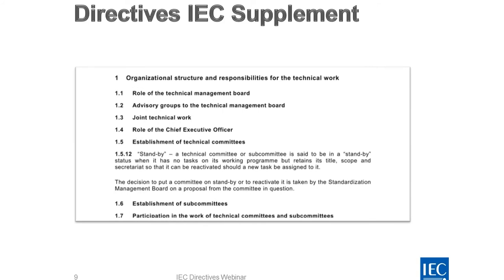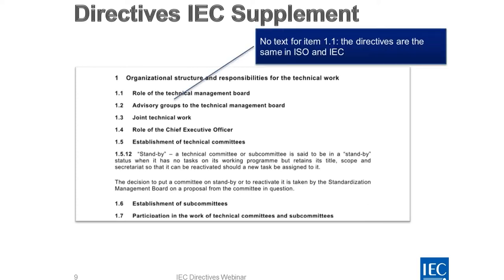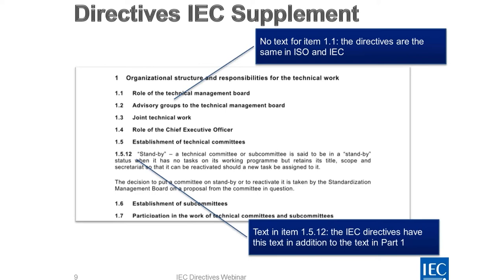When you look at the supplement, in some cases, for example clause 1.1 — role of the technical management board — there is no text, which means the text in Directives Part 1 applies and there is no addition. If you look at clause 1.5.12, there is some additional text in the supplement. This means that for the IEC, in addition to the text in Directives Part 1, you also have to consider the text in the supplement. The global directives for the IEC are in fact a merge or addition of the text in Part 1 and the text in the supplement.